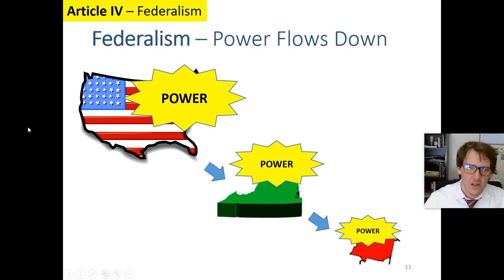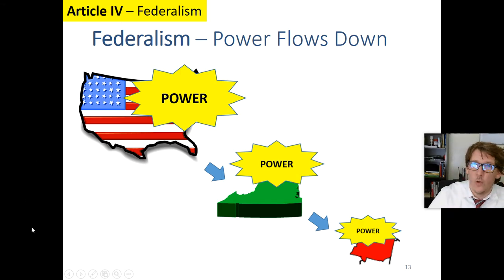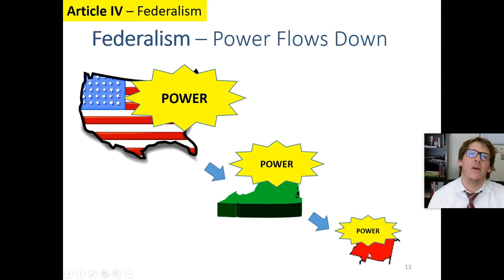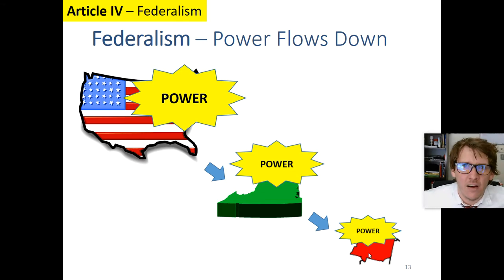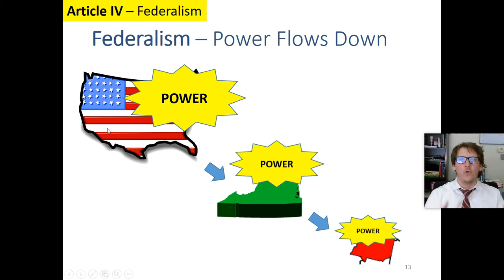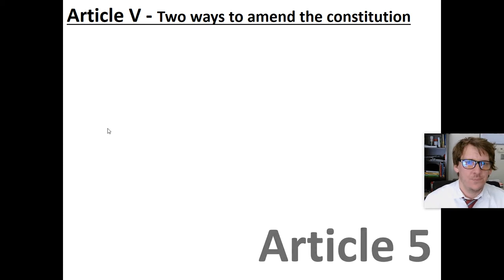If we're deciding who has the most power, the federal government always wins — it's the most powerful. If there's a conflict between a county and the state, the state wins. And if the state has an argument with a federal rule, the federal law wins. That's how federalism works.